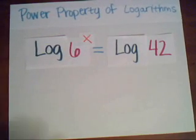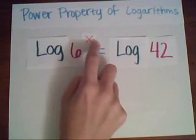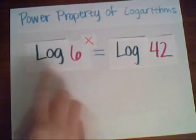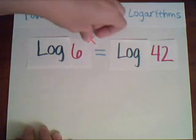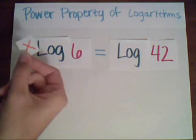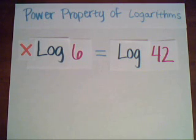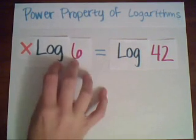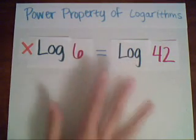The property tells us that we can move the exponent down. Since we took the log of both sides, this x can be picked up and moved to the front. So now all we have to do is solve it like a normal equation. We remember that log 6 and log 42 are both just numbers now.